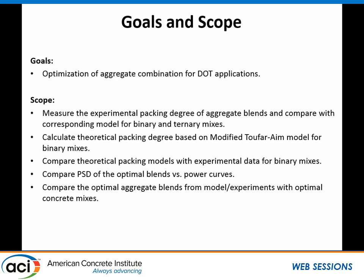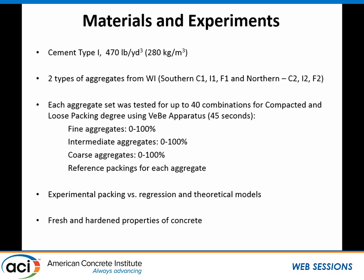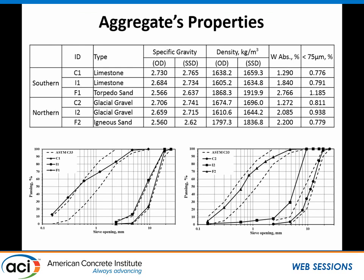This research is for concrete pavements. We're going to talk about experimental, theoretical, and packing models, and also continuous power curves. There are two types of aggregate used in this research: southern Wisconsin aggregate, which are all crushed, and northern aggregate, which are basically round for the coarse, crushed for intermediate, and crushed for the fine. In the experimental matrix, we packed all those different combinations of aggregate between 0 to 100 percent.